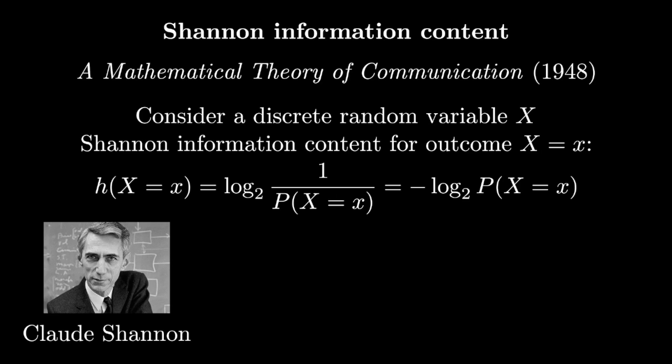Shannon's proposal was to define information content as the log of one over the probability of the outcome. Here I'm using log base 2, which is conventional for discrete random variables, and so we measure information content in bits. For continuous random variables, we would use log base e and then measure information content in nats for natural log. One way that people sometimes talk about information content is in terms of surprise. You're surprised when something improbable happens, and so you can see here our information content h gets bigger as the probability gets smaller.